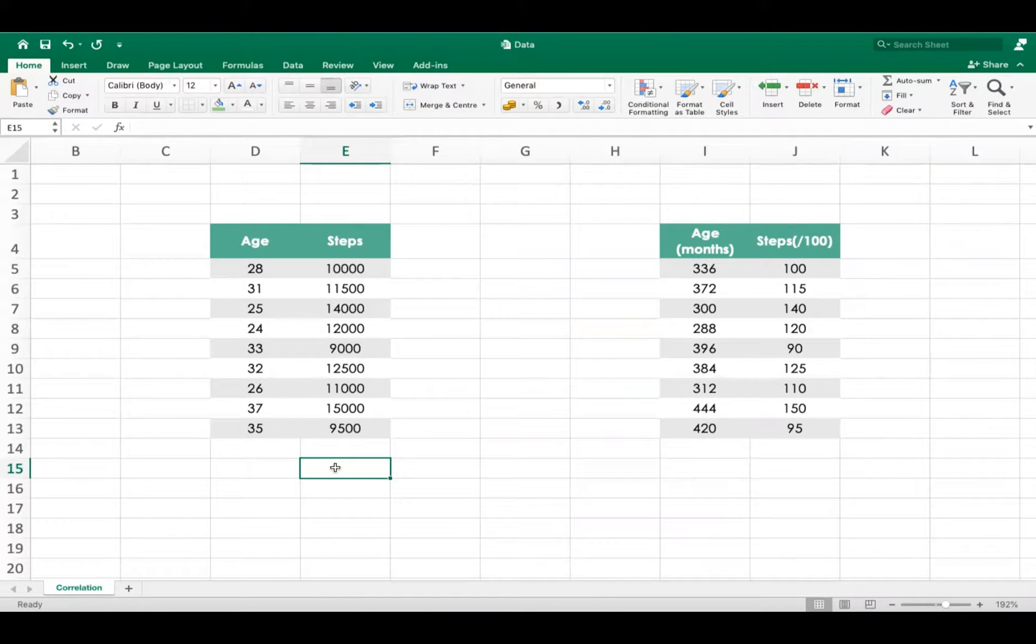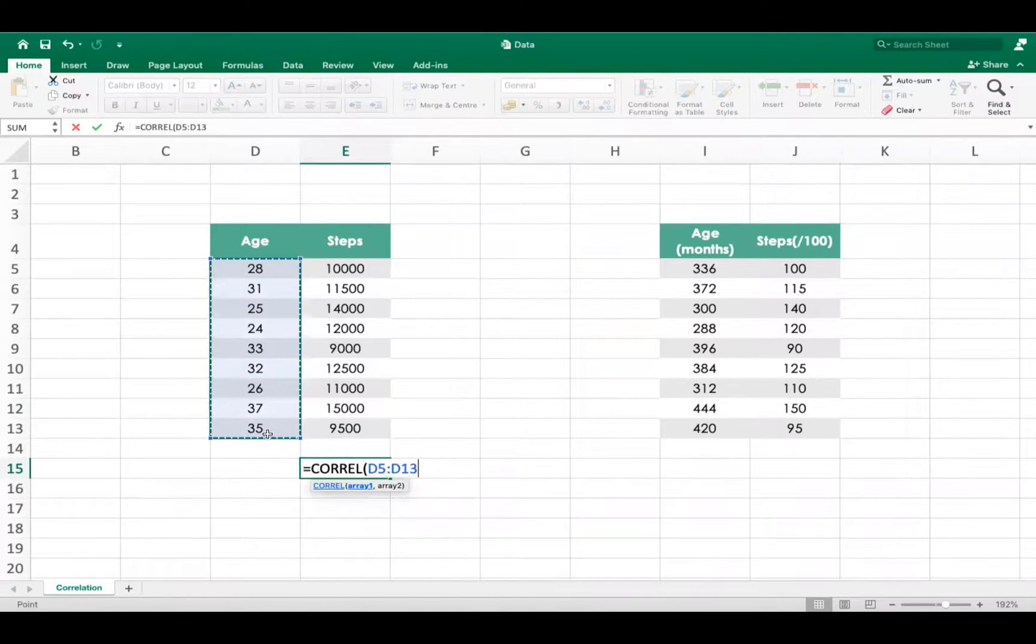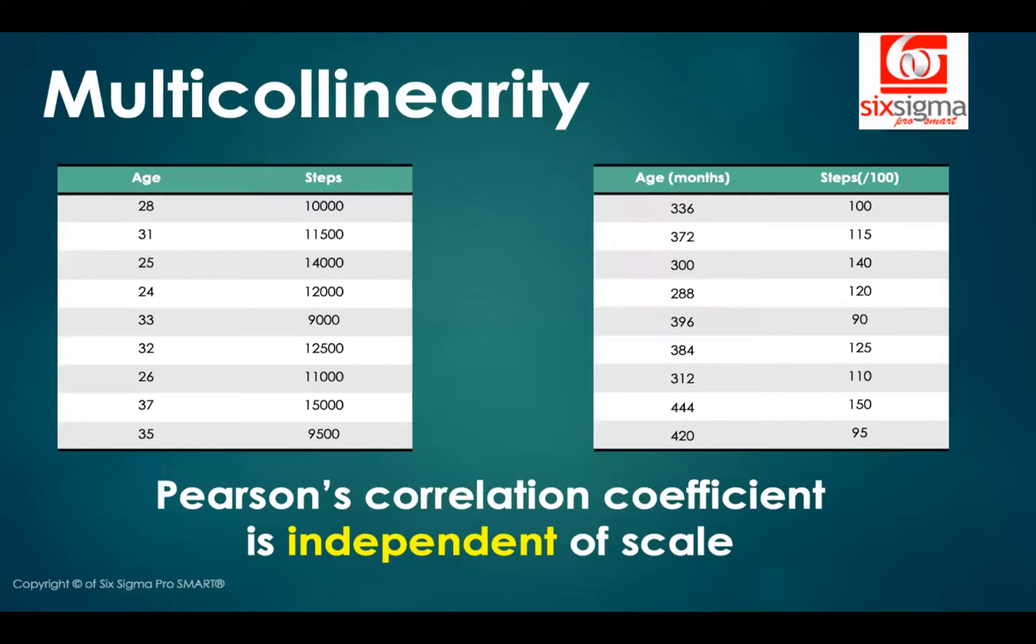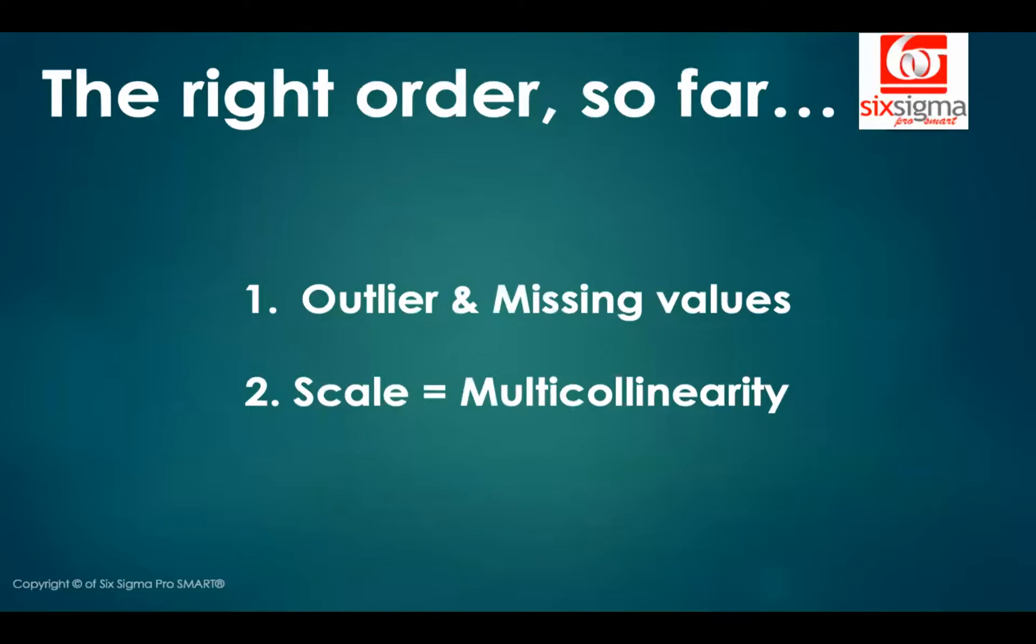Let me show you. All right, so we are here, the same values on an Excel sheet, and I'm applying the correlation function. First, I will take the first column, and then I will take the second column, and I get a correlation value like this. If I just copy-paste the same formula here, you can see now this is referring to the column I and column J, but the values are exactly identical. So once again, it emphasizes that the correlation is independent of scale. This brings us to the first half of the conclusion that we give outliers and missing values a priority, but between scaling and multicollinearity, it doesn't really make a difference. Multicollinearity will be the same irrespective of whether you have scaled or not scaled your data. So you can do this in any order.